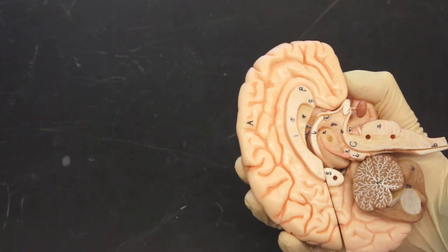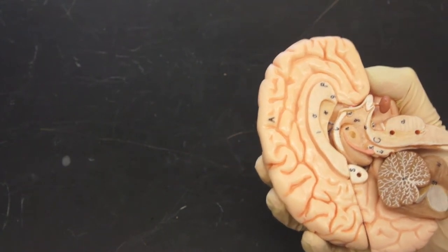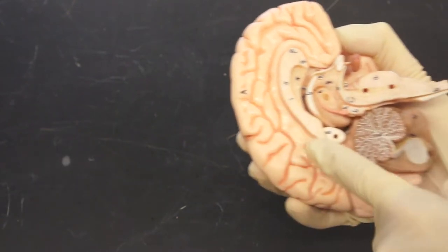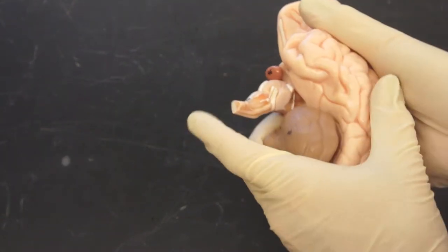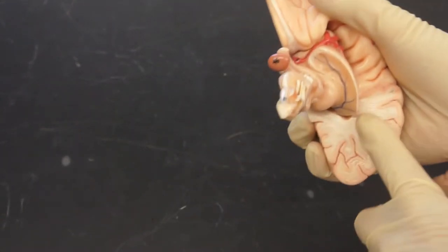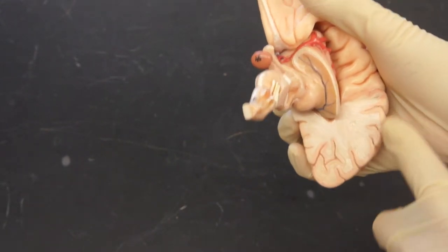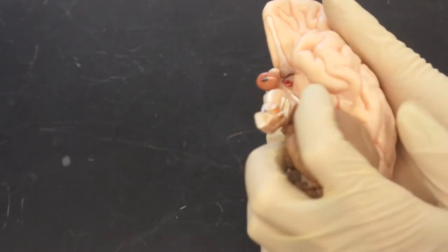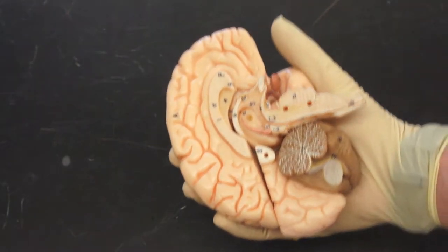And then we have the cerebral cortex, which is going to be this gray section. If we look in here, we see some white matter. So the cerebral cortex is the gray, and on this model it's depicted as pink, but in general it's called gray matter.